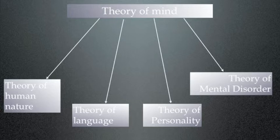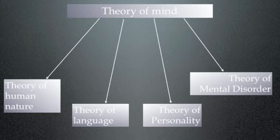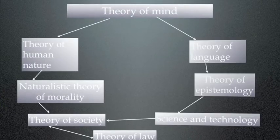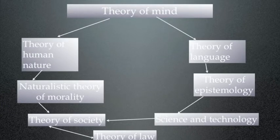And that theory of mind leads to four immediate major consequences. Firstly, a theory of human nature. Secondly, a theory of language. Then of personality. And, of course, a theory of mental disorder. The theory of mind necessarily leads to a theory of mental disorder because mental disorder is simply mind going bad or going wrong.